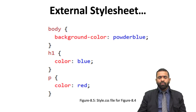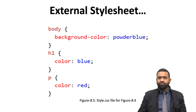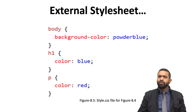In the external style sheet example: body has background-color powder blue, H1 is color blue, paragraph color is red. This is the style sheet file for figure 8.4 — the styles.css file corresponding to the external style sheet example shown in the previous slide.